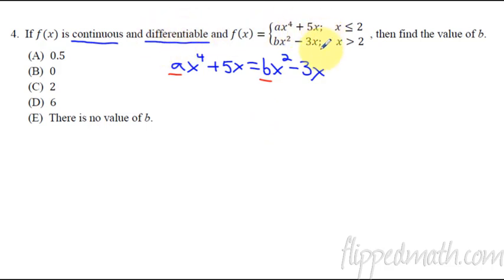So what we do is we then also take that it's differentiable, meaning its derivatives must equal each other. So the derivative of the first piece is 4ax cubed plus 5, and that has to equal the derivative of the second piece, 2bx minus 3. And when do they equal each other? When x is a 2. So if x equals 2, these two pieces are differentiable. The derivatives must equal. Now you'll end up with two equations with a's and b's, and you should be able to solve it from there.